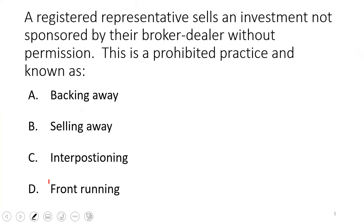A registered rep sells an investment not sponsored by their broker-dealer without permission — that's selling away, a prohibited practice. Broker-dealers have an approved product list; the proper process is for the sponsor to get a selling agreement and get on that list. Backing away is when a market maker fails to honor a firm quote — also prohibited. Front-running is trading ahead of your customers — also a big no-no. Interpositioning is putting a third party into a trade, which may or may not be a violation depending on context.